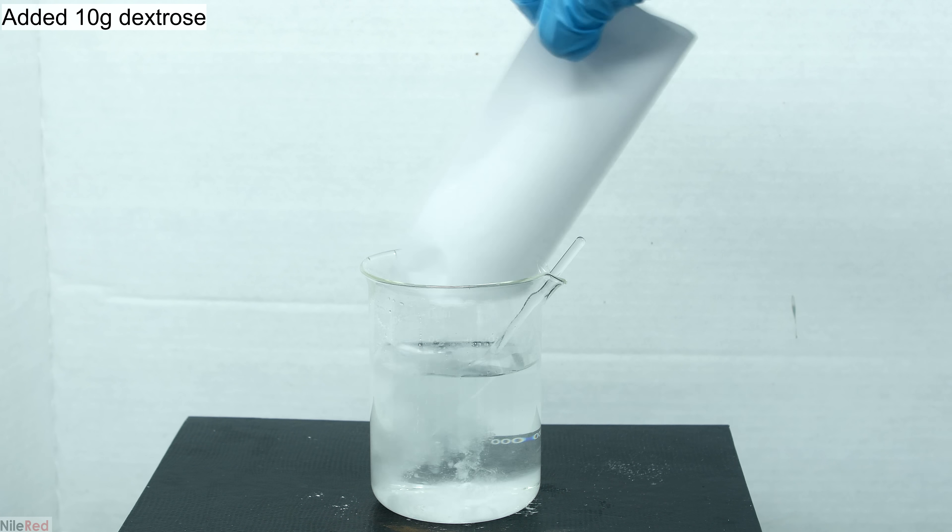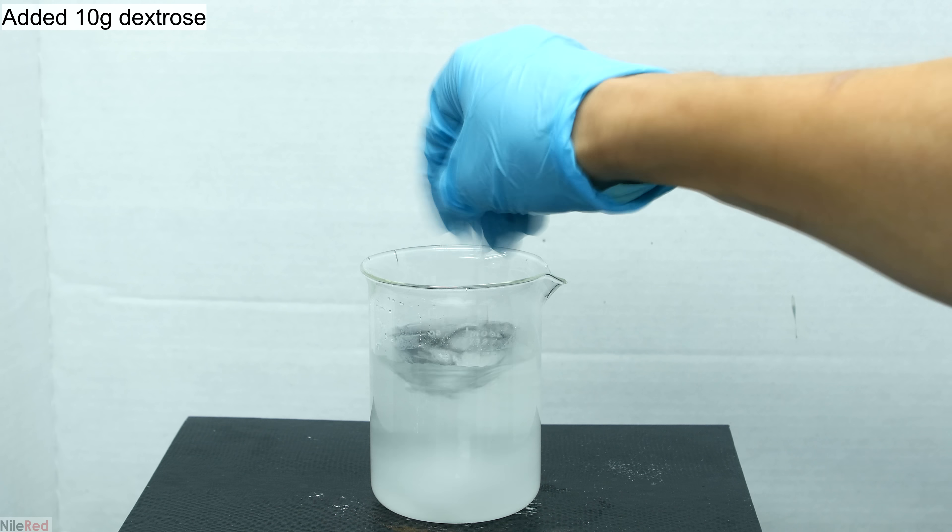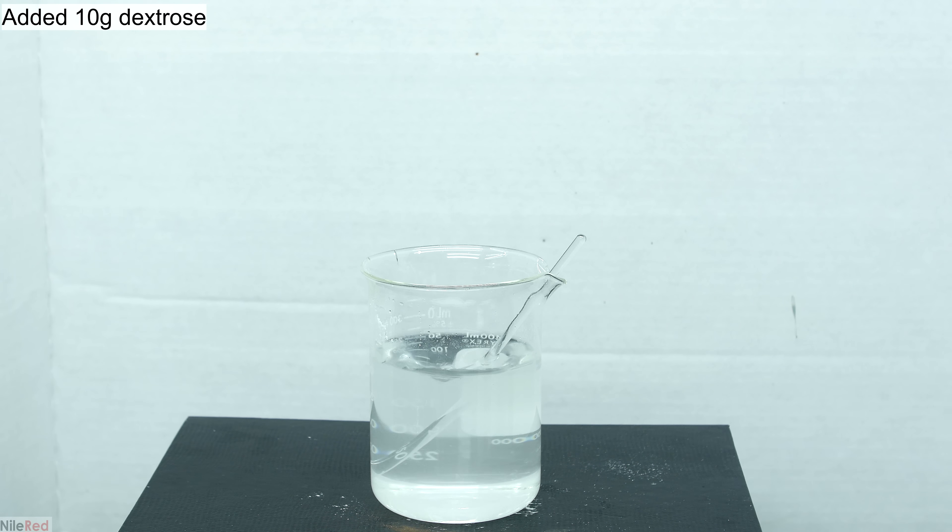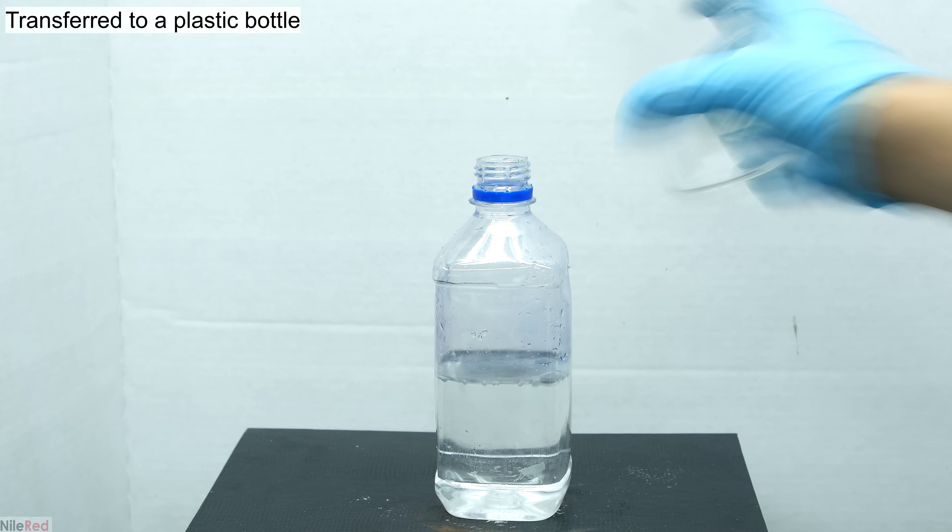Into the potassium hydroxide solution I then pour in about 10 grams of dextrose. Again we stir things until all of the dextrose has dissolved and then I take out the stir rod. The potassium hydroxide and dextrose solution is then poured into a water bottle.